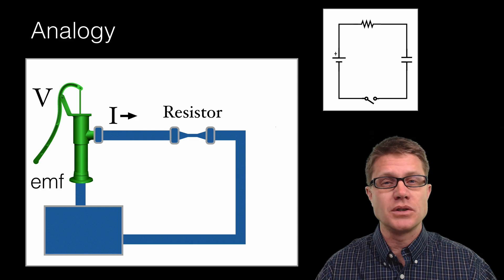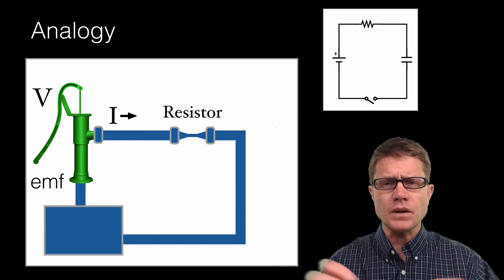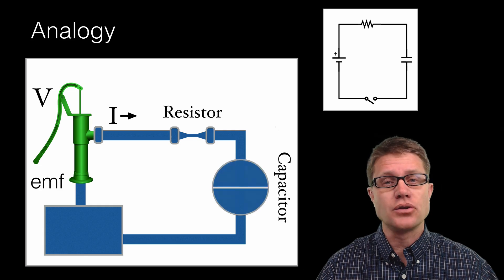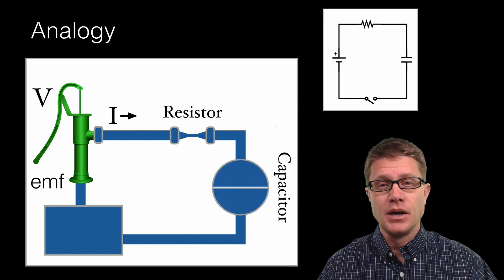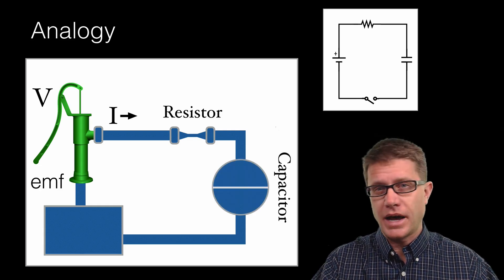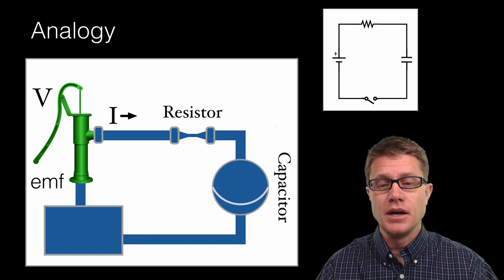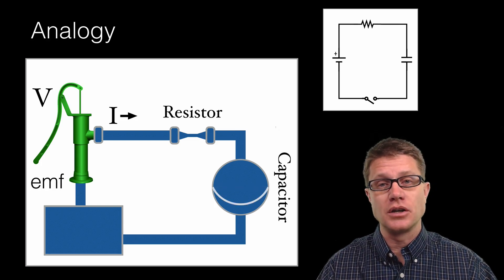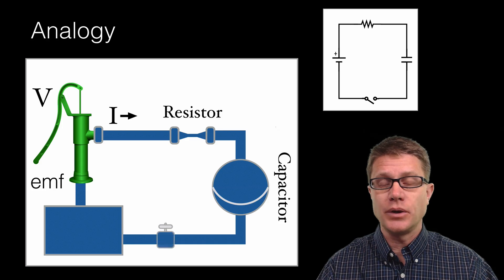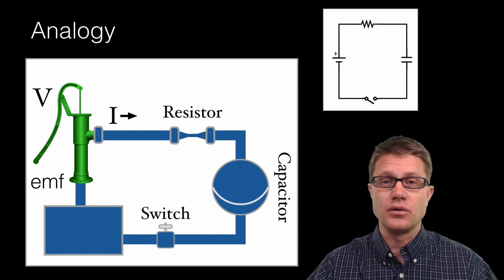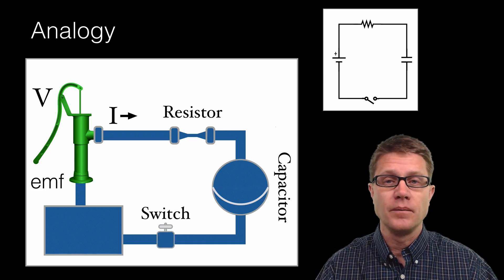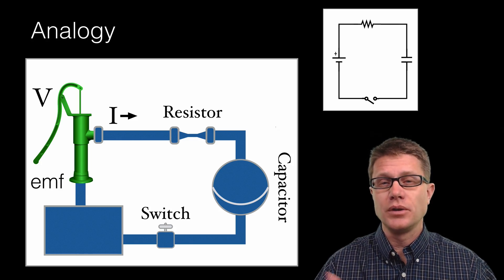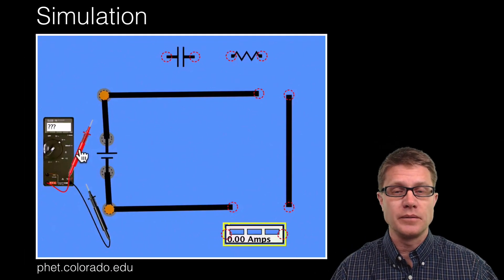A resistor is going to be anything that slows down the movement of that water. A capacitor is going to be something almost like a dam — a rubber sheet that goes across it — and what it does is stop current so we can build up charge on that capacitor. A switch is anything where we can simply just turn the whole thing off so water can't flow. If you have this analogy of how each of these elements work, it really helps you to solve simple problems.